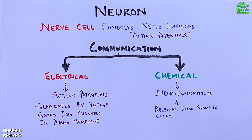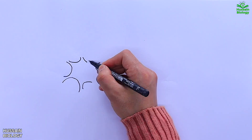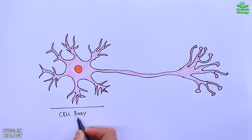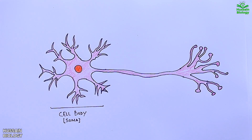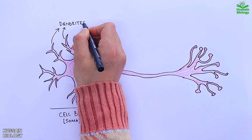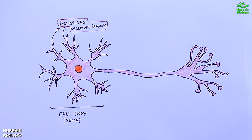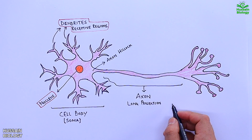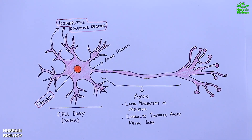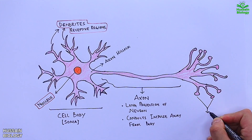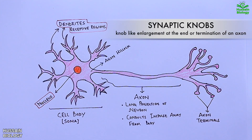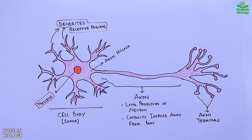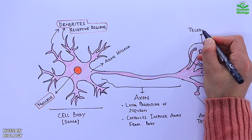Now let's see the structure of the neuron. In this diagram, the part labeled as the cell body is also known as the soma or perikaryon. The branched extensions are the dendrites, which are the receptive regions of the neuron. We also have the nucleus, axon hillock, and the axon — the long projection of the nerve cell that conducts nerve impulses away from the cell body. On the right we have the axon terminals, through which synaptic vesicles release neurotransmitters upon vesicle fusion. These terminal end branches of the axon are collectively termed telodendria.